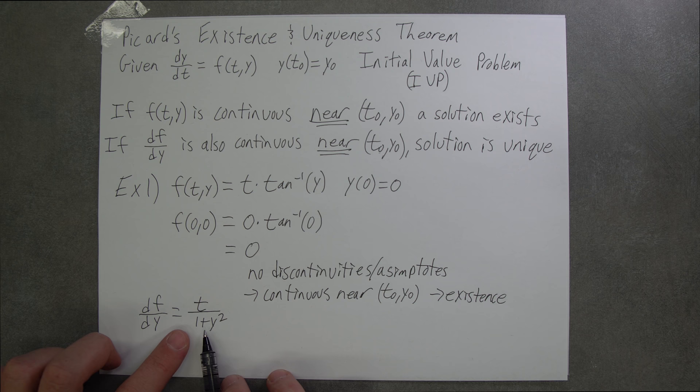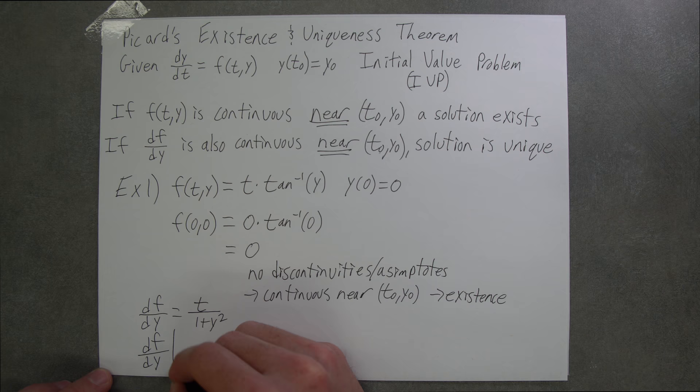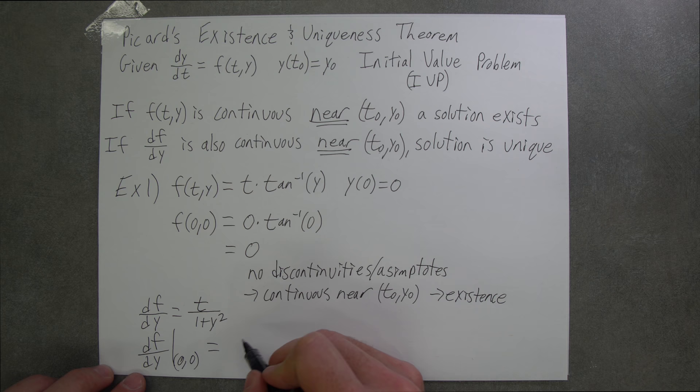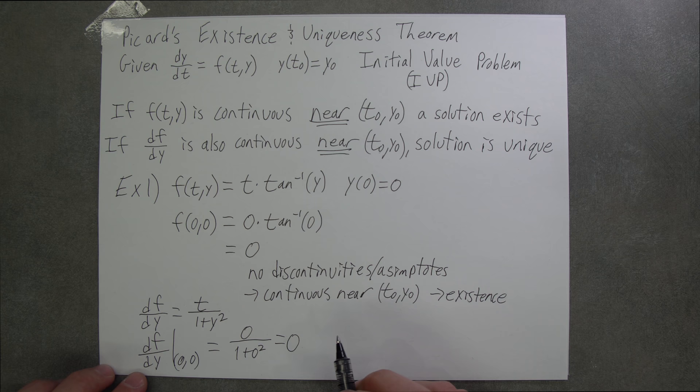So that's how we got the 1 plus y squared over here. We will now evaluate this at (0,0), our initial condition. And this is equal to 0 over 1 plus 0 squared, which is equal to 0.